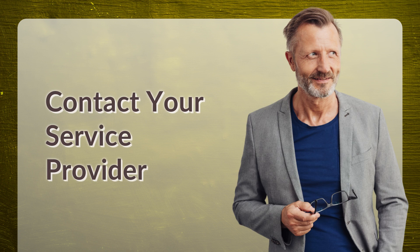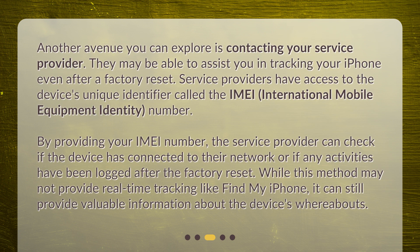Another avenue you can explore is contacting your service provider. They may be able to assist you in tracking your iPhone even after a factory reset. Service providers have access to the device's unique identifier called the IMEI, International Mobile Equipment Identity, number. By providing your IMEI number, the service provider can check if the device has connected to their network or if any activities have been logged after the factory reset. While this method may not provide real-time tracking like Find My iPhone, it can still provide valuable information about the device's whereabouts.